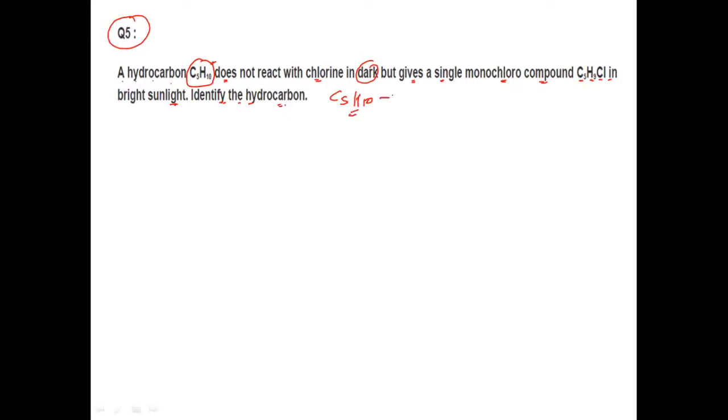C5H10 - if we see the formula is CnH2n. This CnH2n formula represents two types of hydrocarbons: one is alkene and the other we discussed is cycloalkane.